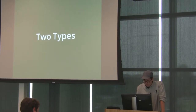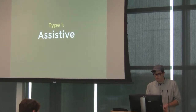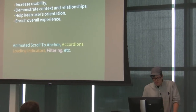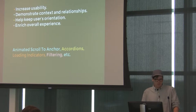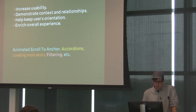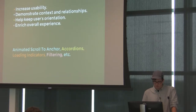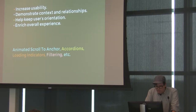For the most part, I'm going to talk about two types of movement on the web. The first type is assistive movement. This type of movement complements the UI, can increase usability, and demonstrate context and relationships. For instance, animating your scrolling to an anchor shows the user what happened rather than just directly shooting them to an anchor. It's a really simple concept, but it's actually very powerful to keep users oriented. And then it can just enrich the overall experience.